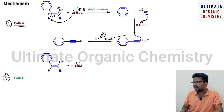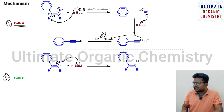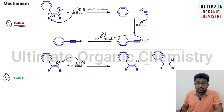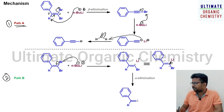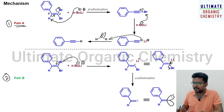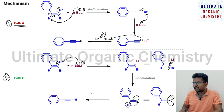In Path B, the anion of n-butyllithium approaches the bromine atom and the electron shifts toward the carbon, generating a carbanion with lithium as the counter cation, forming a carbon-lithium bond. This intermediate undergoes alpha elimination, where lithium bromide is removed, forming a carbene intermediate. The carbene has two orbitals with two electrons in one orbital. A 1,2-hydrogen shift then takes place to give the final product.